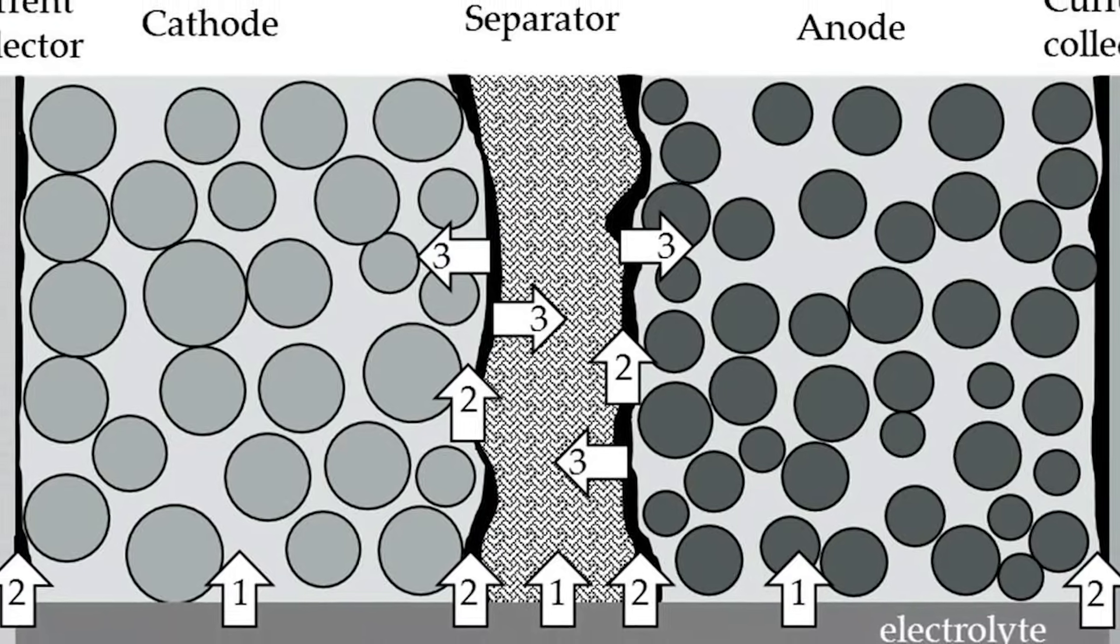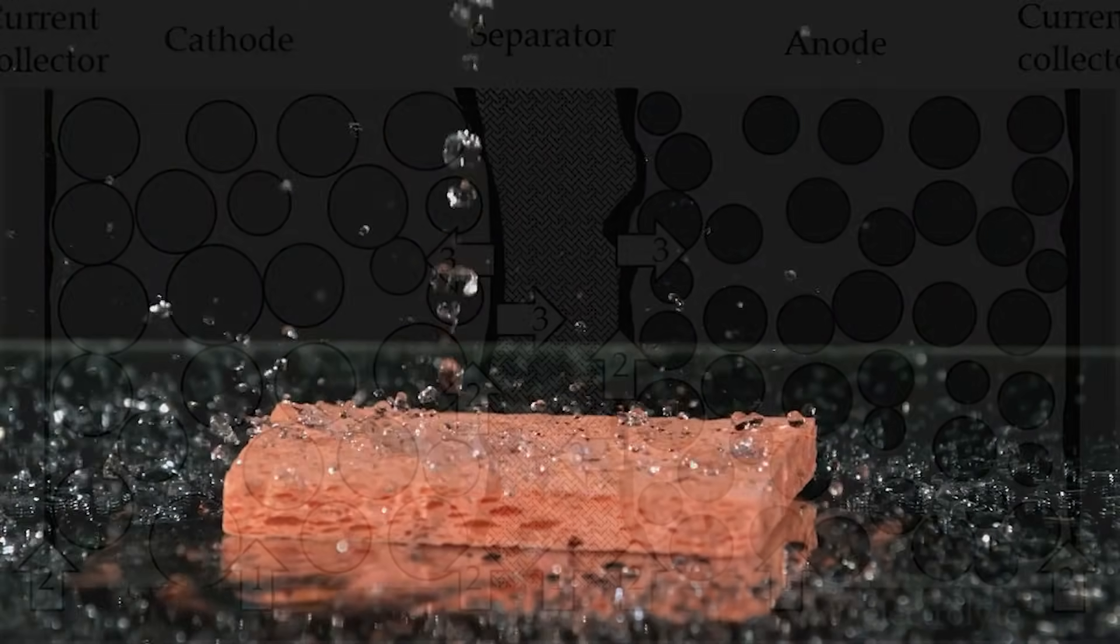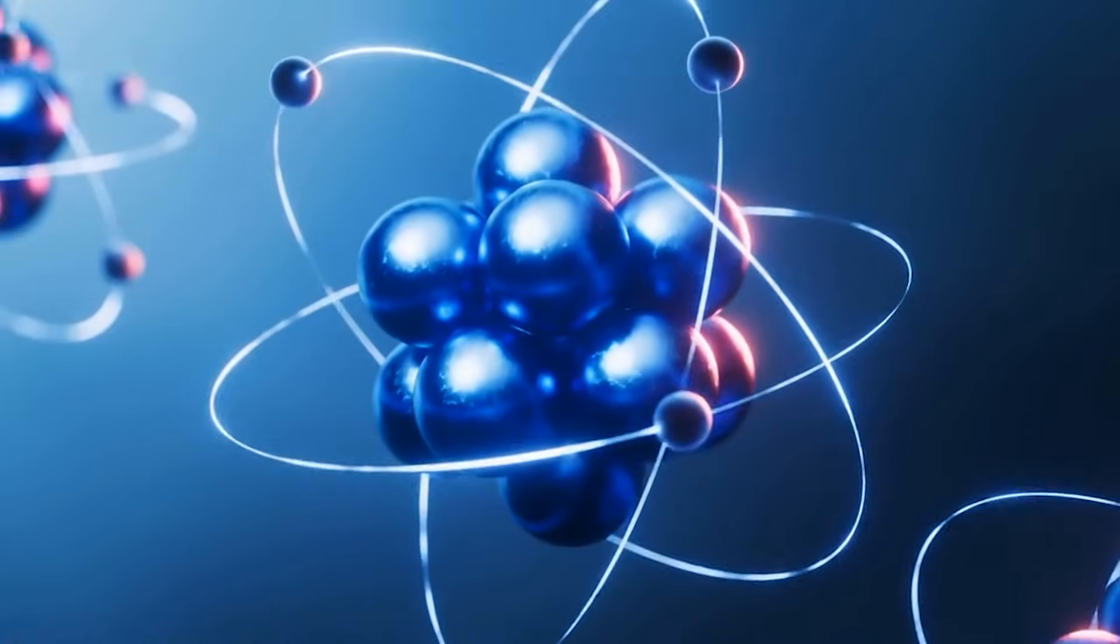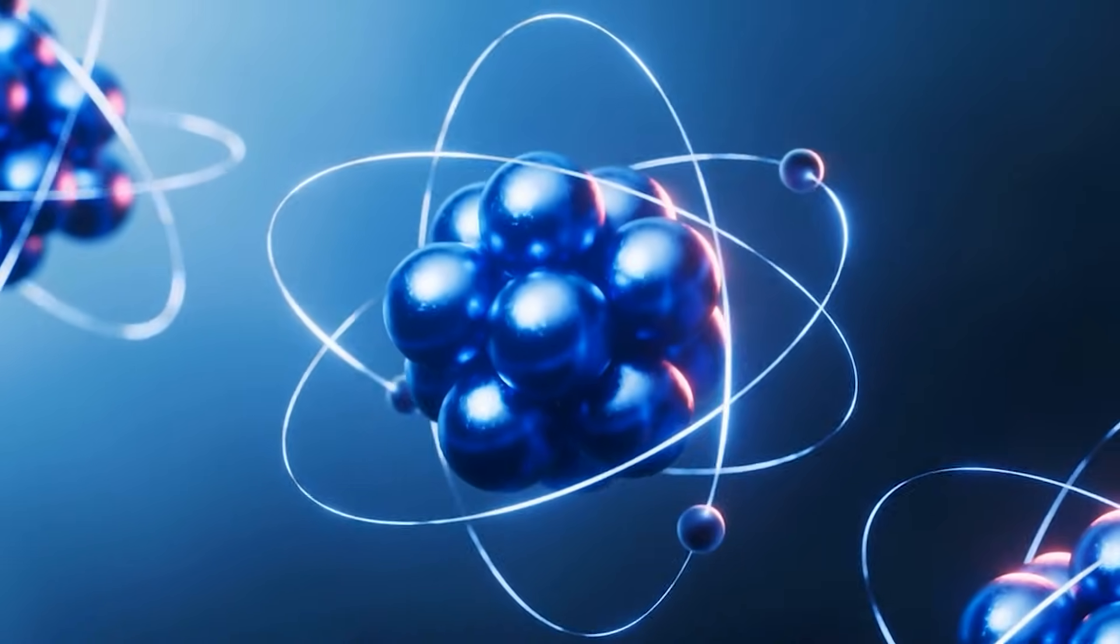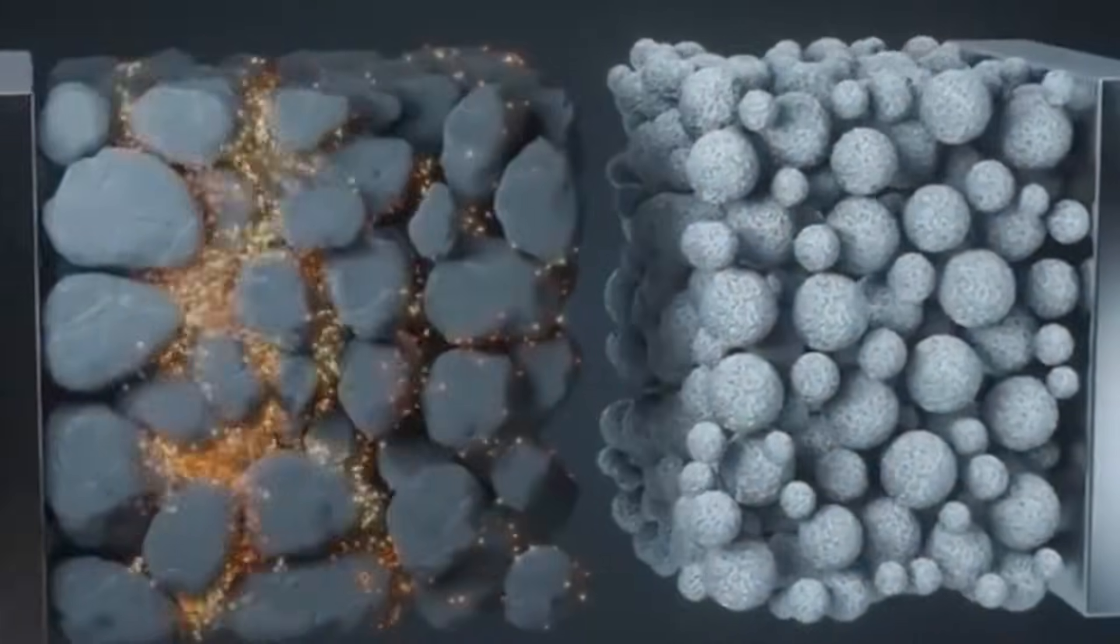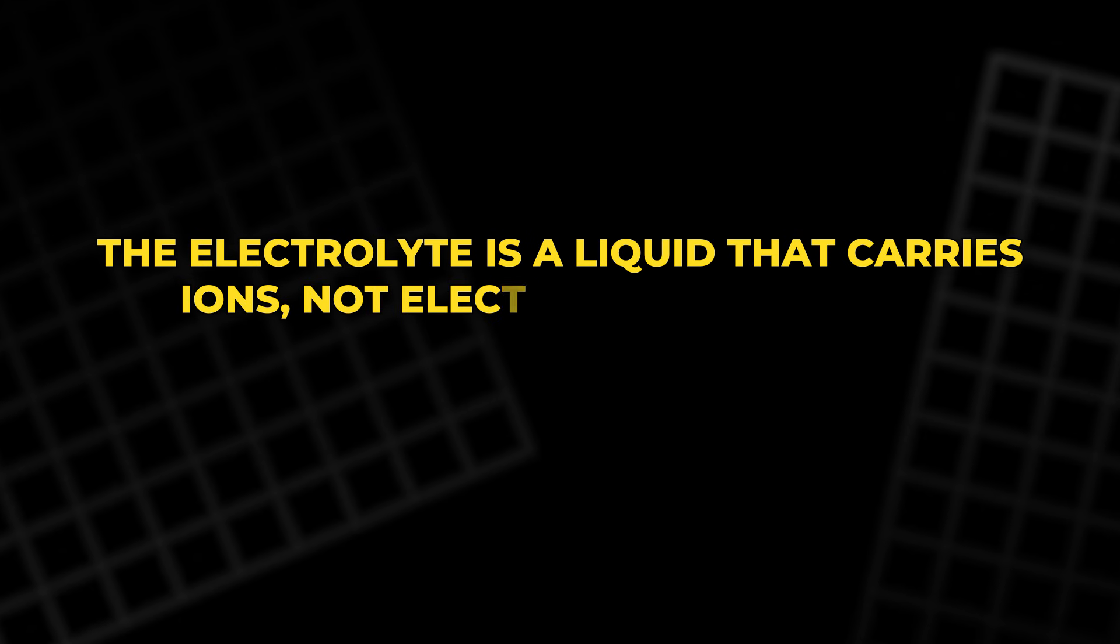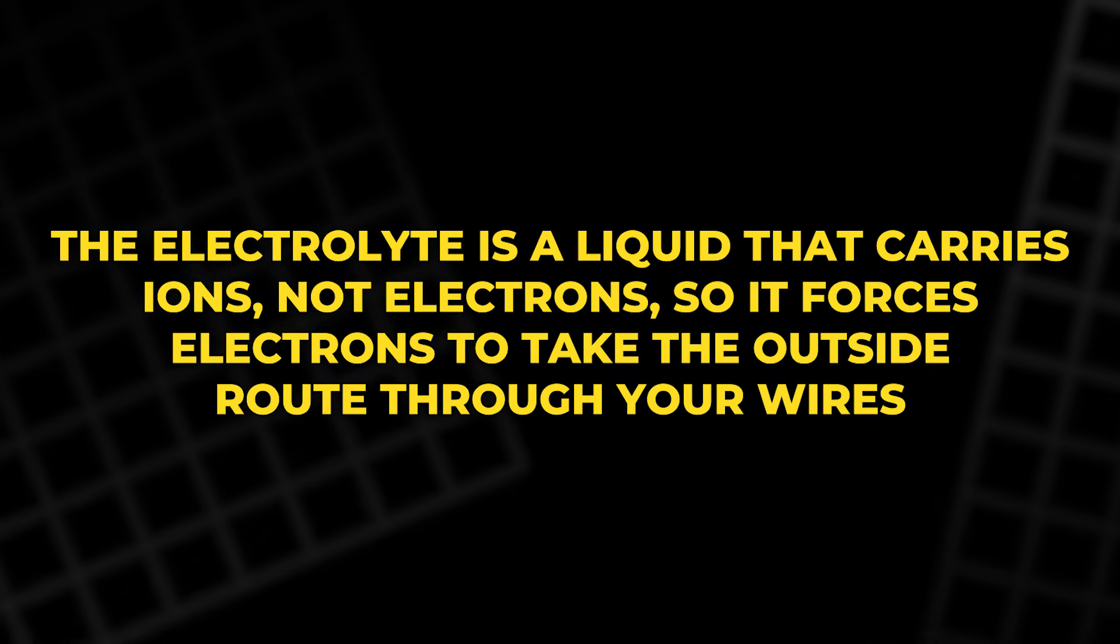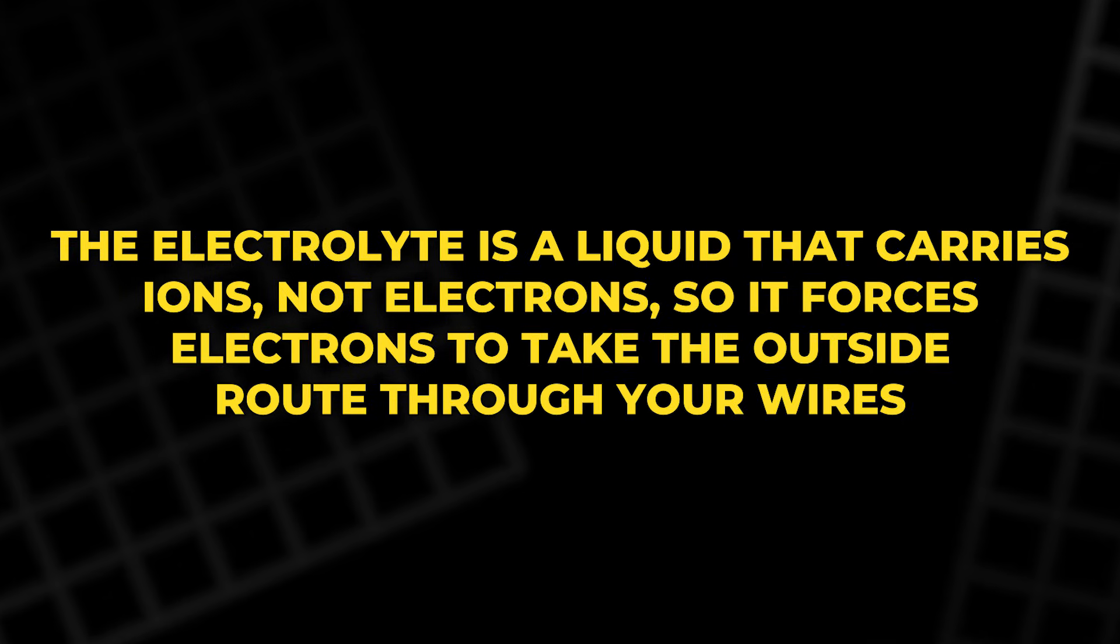Between them is a separator, soaked in electrolyte. The separator is porous, like a sponge. It prevents the two electrodes from touching, which would cause a short, but it still lets lithium ions pass through its pores. The electrolyte is a liquid that carries ions, not electrons, so it forces electrons to take the outside route through your wires.